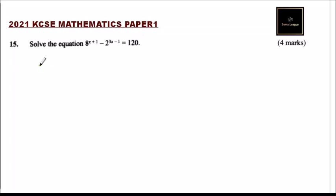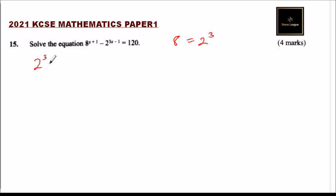Question number 15: solve the equation 8^(x+1) - 2^(3x-1) = 120, worth 4 marks. We try to write everything to a common base of 2. Since 8 = 2^3, we can write 2^3 with the bracket, applying the third law of indices, giving 2^(3(x+1)).